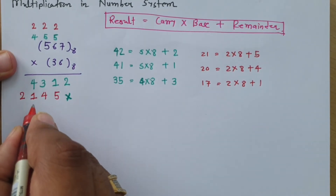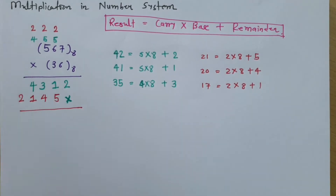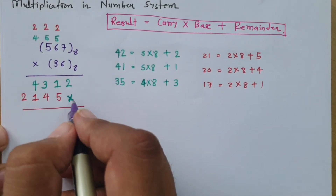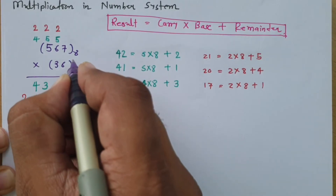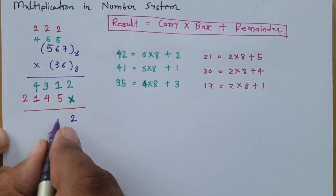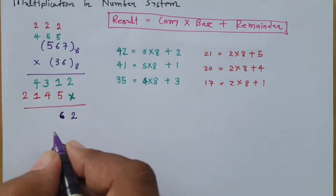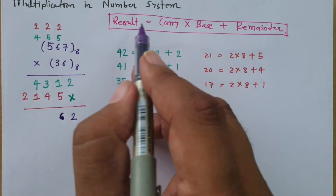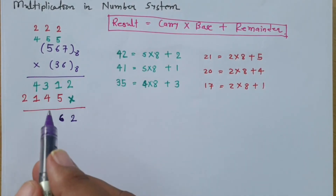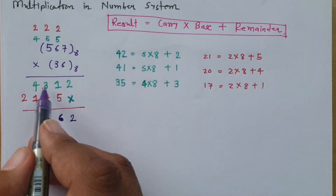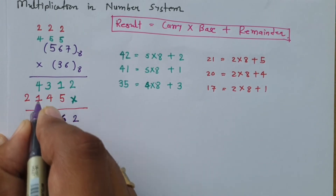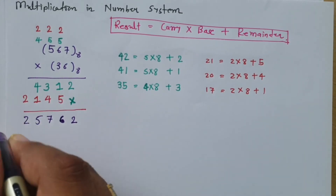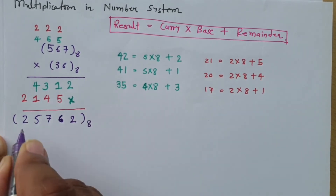Now I need to do basic addition of the partial products to get the final answer. See: 1 plus 5 equals 6, which does not exceed 7, so I write 6 directly. If it exceeds 7 then I need to apply the formula, but since it is less than 7 I write 6 directly. Then 3 plus 4 equals 7, not exceeding 7, so I write 7. In the next column, 4 plus 1 equals 5, and 2 carries over. This gives the final octal multiplication answer.